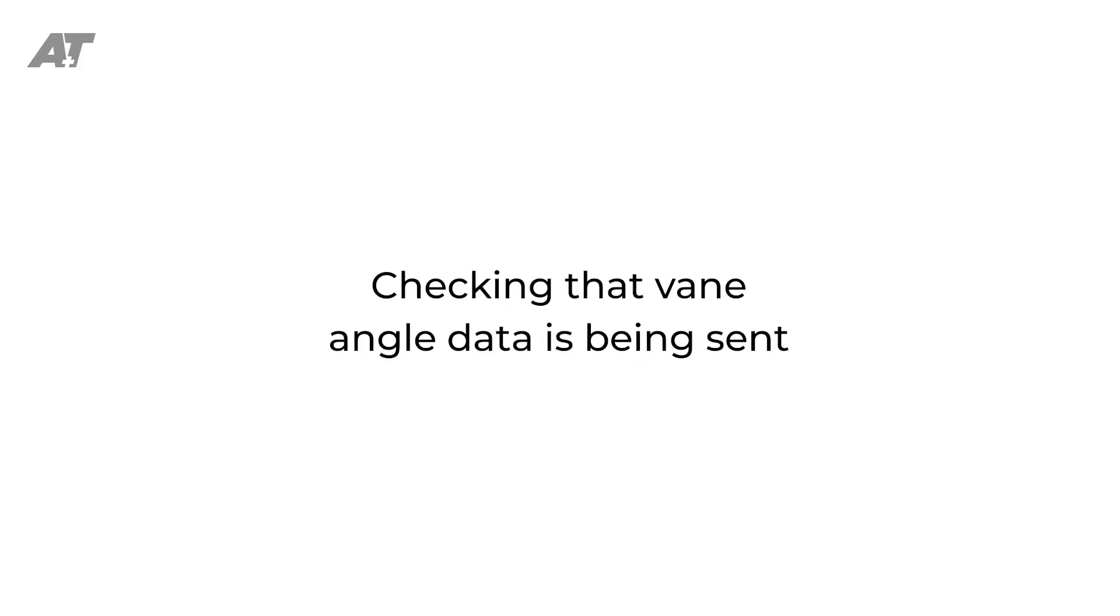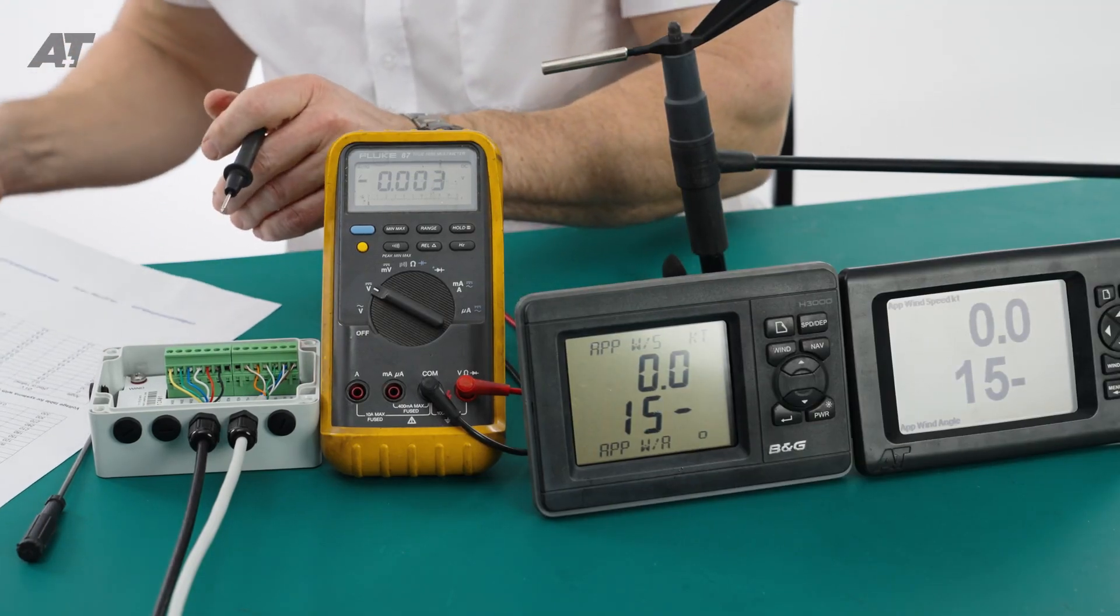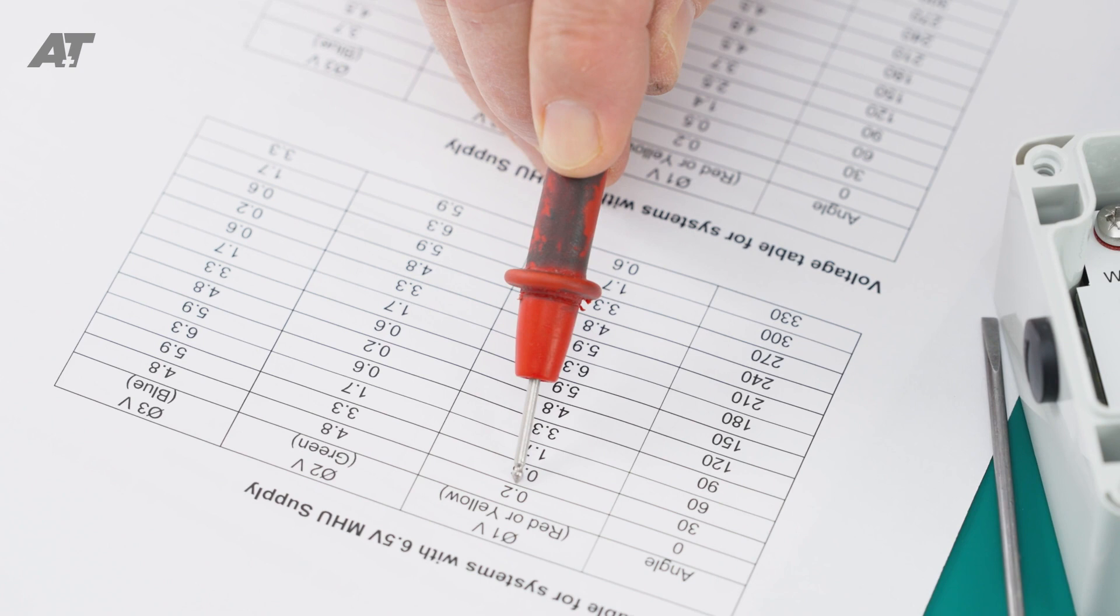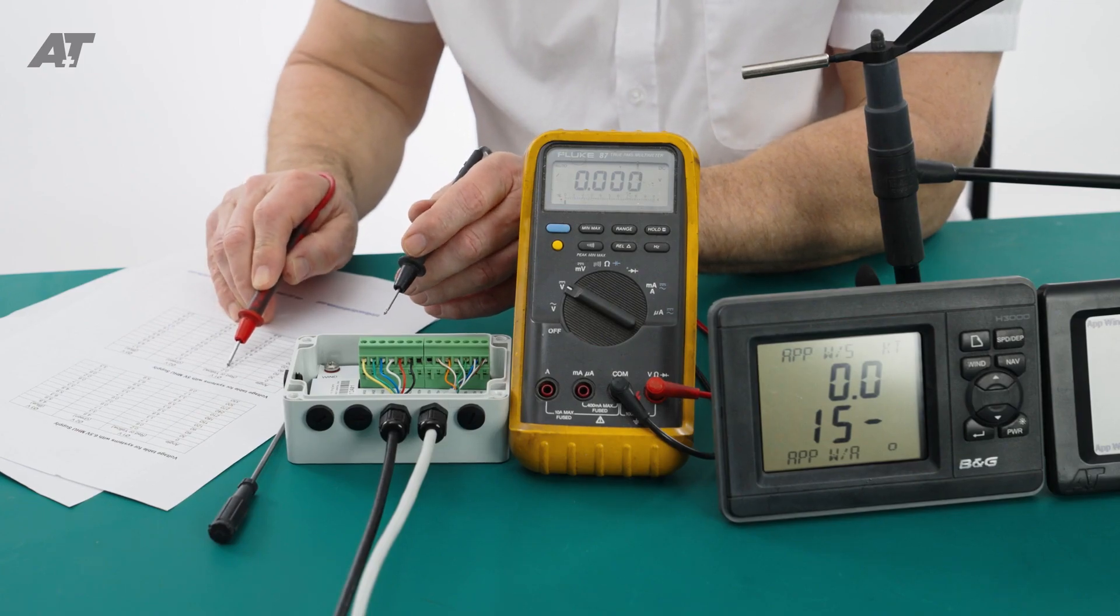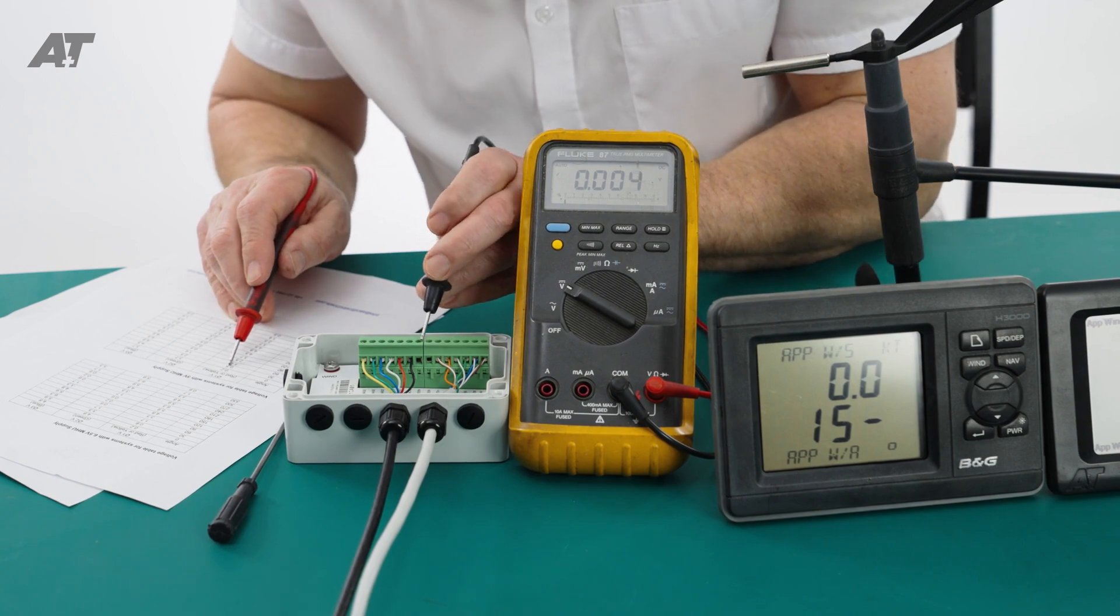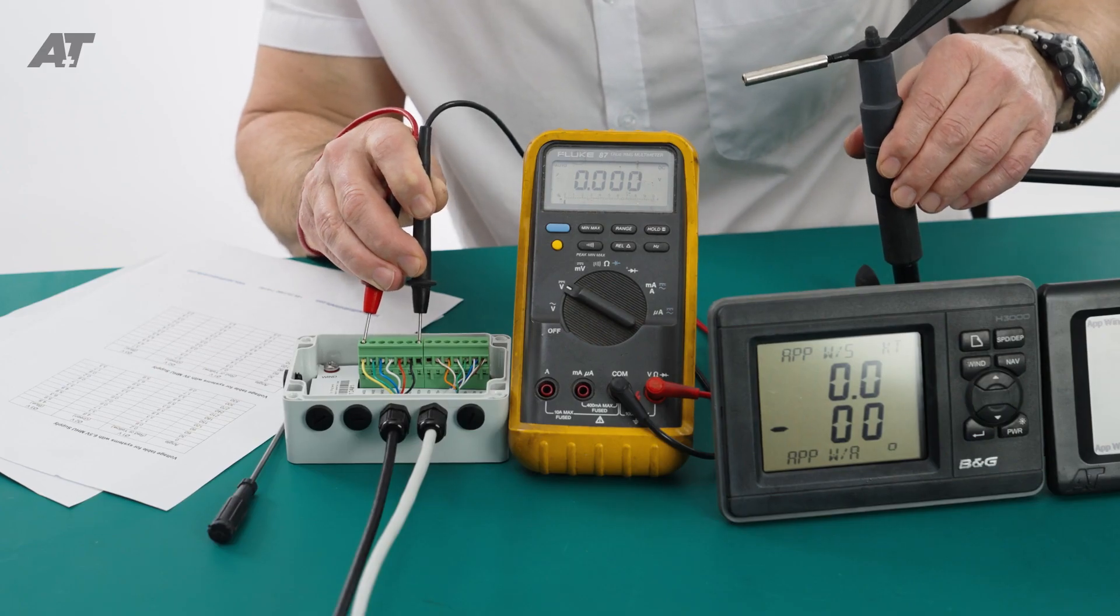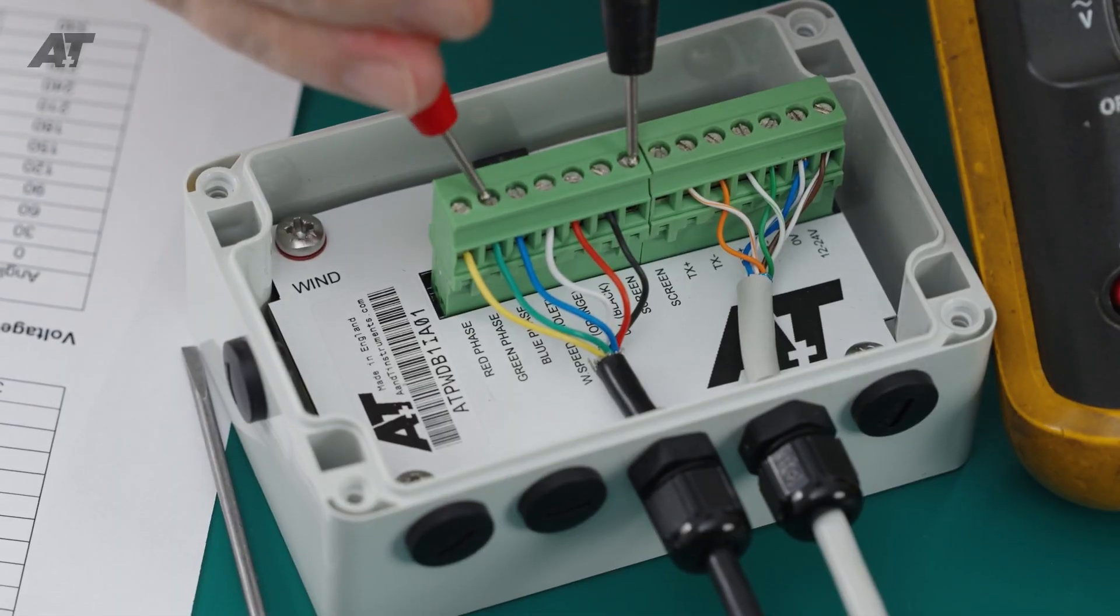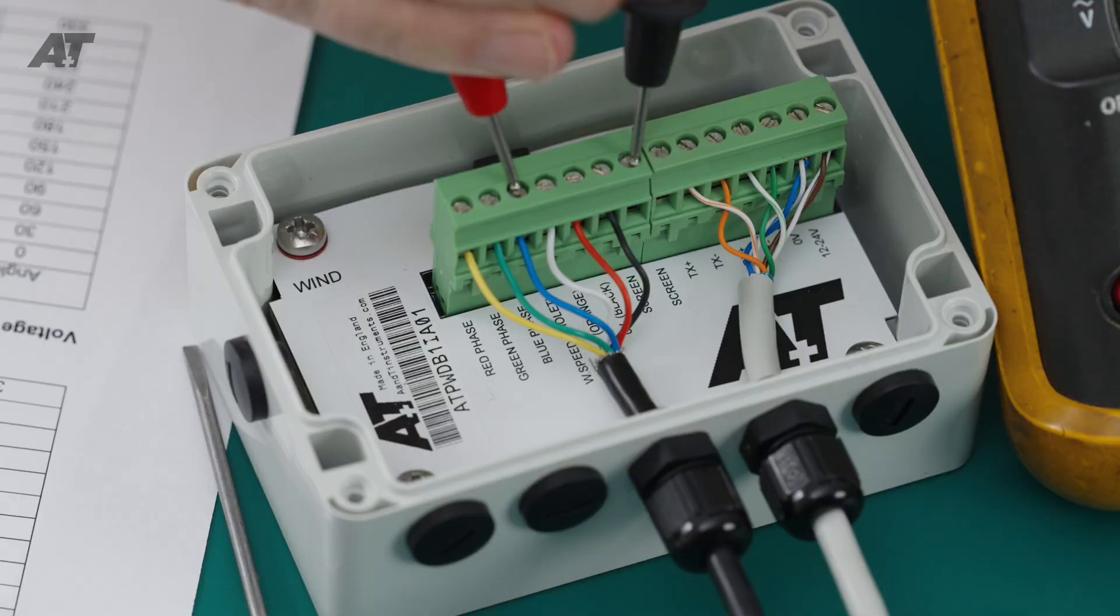Now, with a meter, check the vane angle data is being sent by the wind sensor. There is a chart on the printout that shows the expected voltages at set angles for both 6.5 and 5 volt systems. With the masthead unit pointing straight ahead, you would expect to see close to 0 volts on the red or yellow phase, and on a 6.5 volt system, close to 3.7 volts on the green phase and similar, close to 3.7 volts on the blue phase.